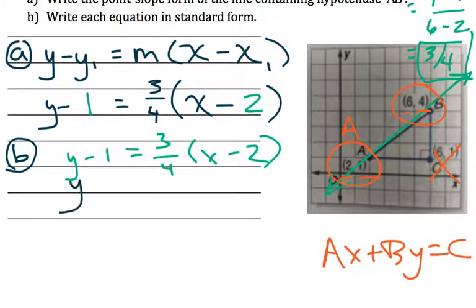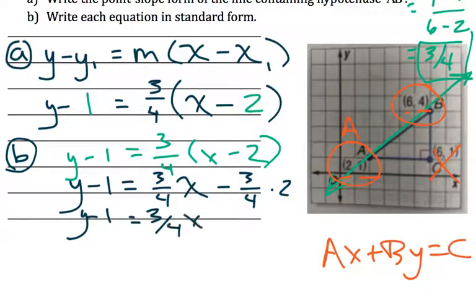Here, nothing to do on the left side, but I'll distribute 3 fourths to the x and the 2. I'll show all my work for this one. A little bit more simplifying involved, 3 fourths x minus 3 over 2.